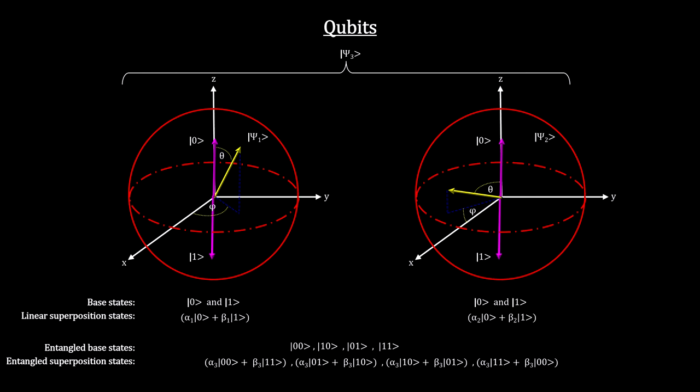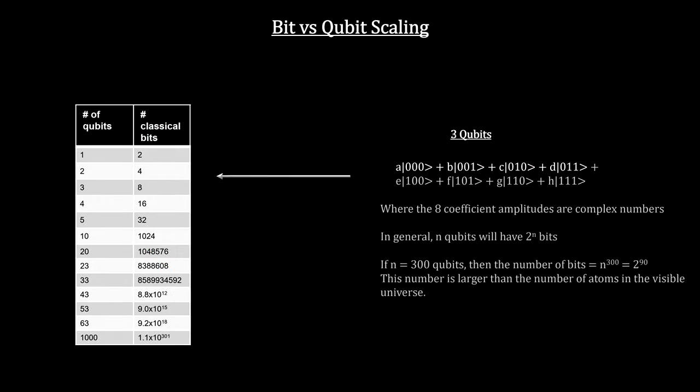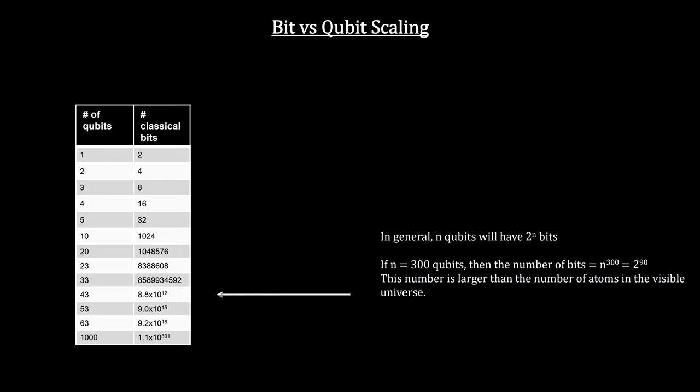What's more, because of quantum entanglement, every time we add a qubit we double the number of classical bits the entangled whole can represent. Here's a table that compares classical computer bits to qubits. Three qubits are equivalent to eight bits, a full byte. This scaling grows into significant numbers as the number of qubits are increased. The real impact comes when we start talking about hundreds or even thousands of qubits.